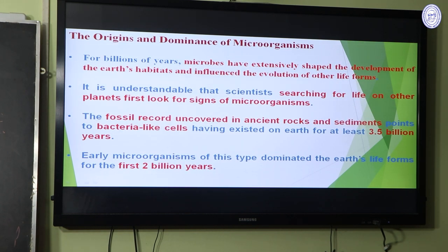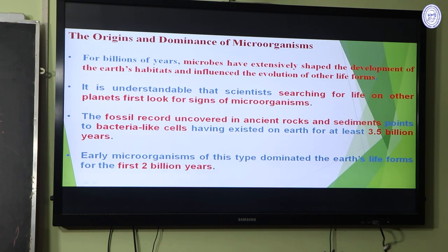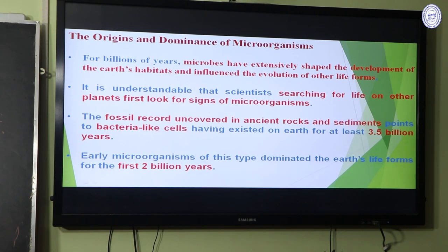The origin and dominance of microorganisms: for billions of years, microbes have extensively shaped the development of the earth's habitats and influenced the evolution of other life forms. It is understandable that scientists searching for life on other planets first look for signs of microorganisms. The fossil record uncovered in ancient rocks and sediments points to bacteria-like cells having existed on earth for at least 3.5 billion years. Early microorganisms of this time dominated the earth's life forms for the first 2 billion years.